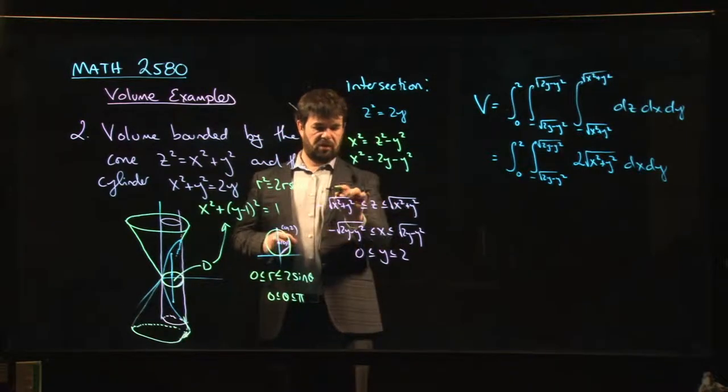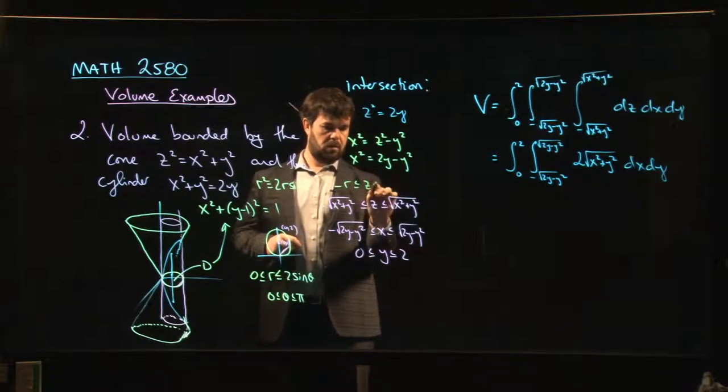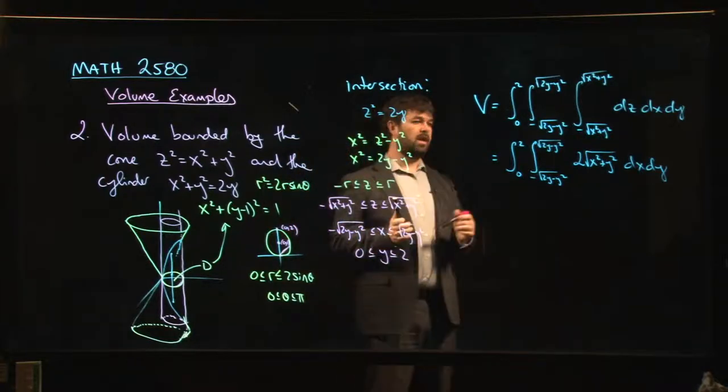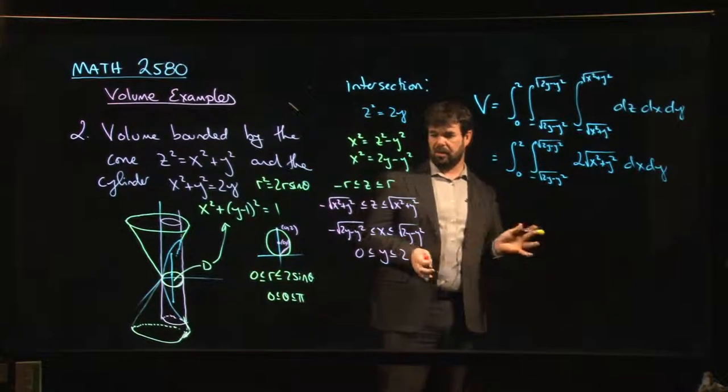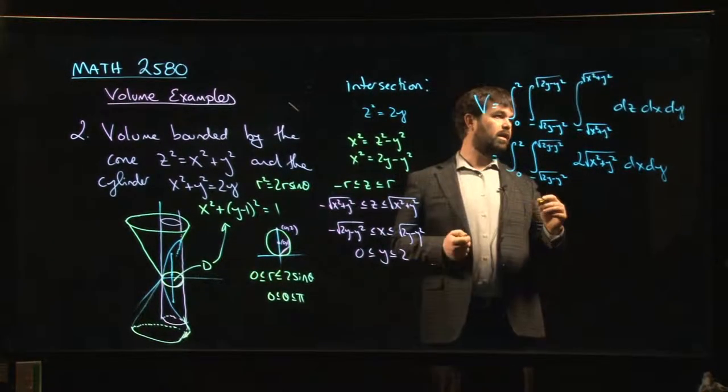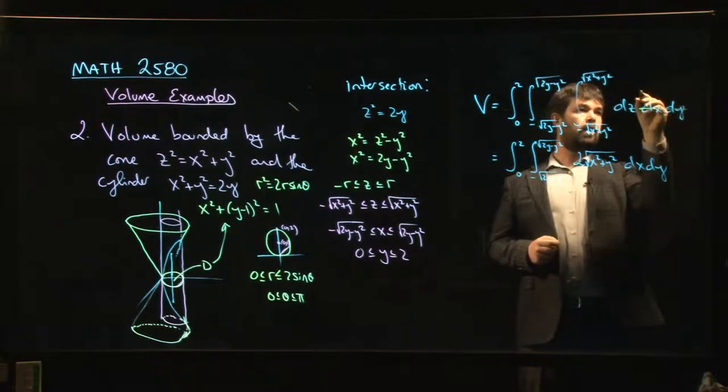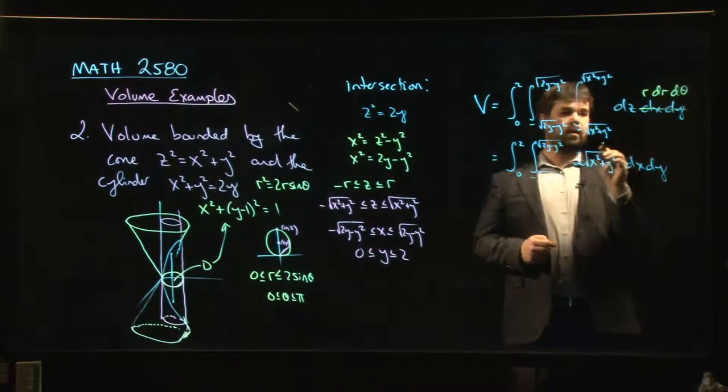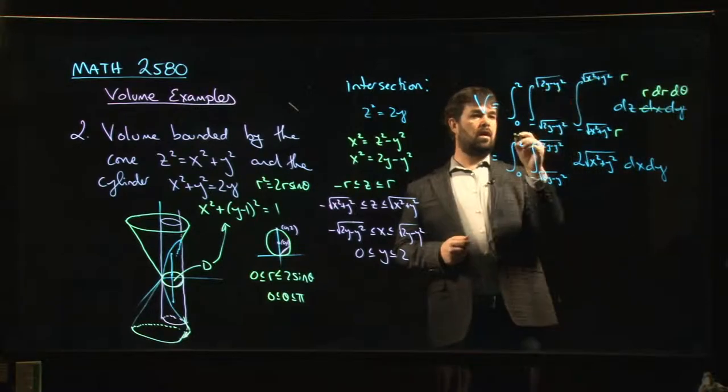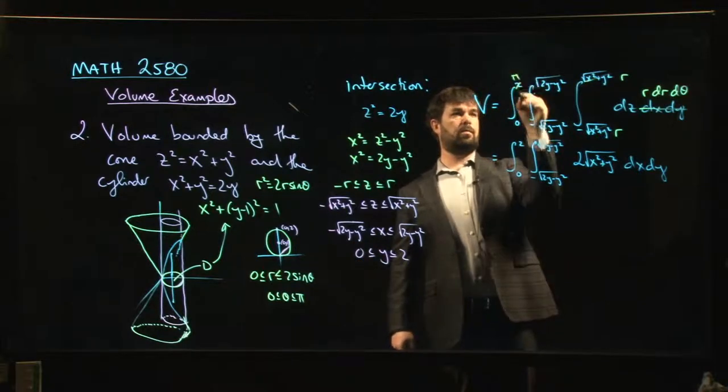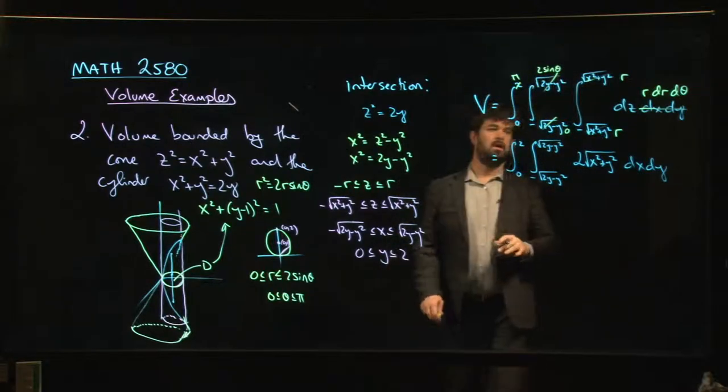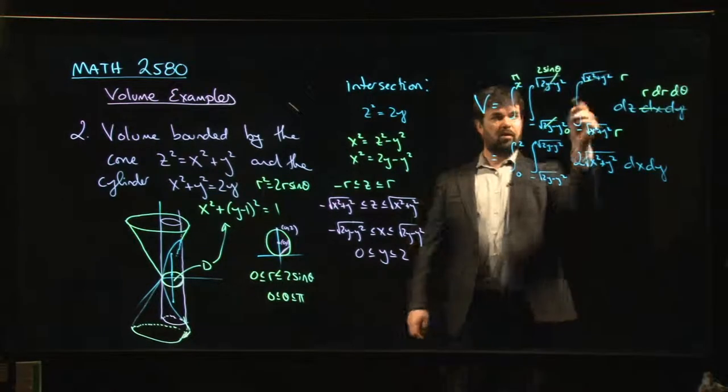If you wanted to notice that these bounds on z just say that z is between minus r and r. So without explicitly saying so, we've kind of done a cylindrical coordinate transformation here. Without even introducing what cylindrical coordinates are, we're already using them. So that means that what I could have done here is I could replace this dx dy by r dr d theta. Replace that by r, that by r. And then over here, now we go not from 0 to 2, we're going to go from 0 to pi. That's going to become a 0. That's going to become a 2 sine theta. That's what the integral would look like, the triple integral in cylindrical coordinates.